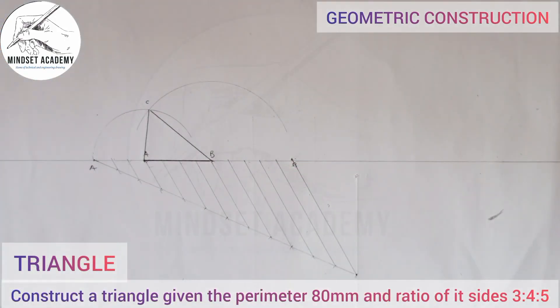This is how you can construct a triangle that has the ratio of 3:4:5 with the perimeter of 80 millimeters.